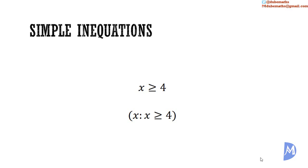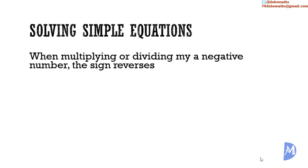Most of the rules that apply to manipulating equations apply, with some notable exceptions. When dividing or multiplying by a negative number, the sign reverses. For example, 4 is less than 6. If we multiply both sides by negative 1, we get negative 4 is greater than negative 6.